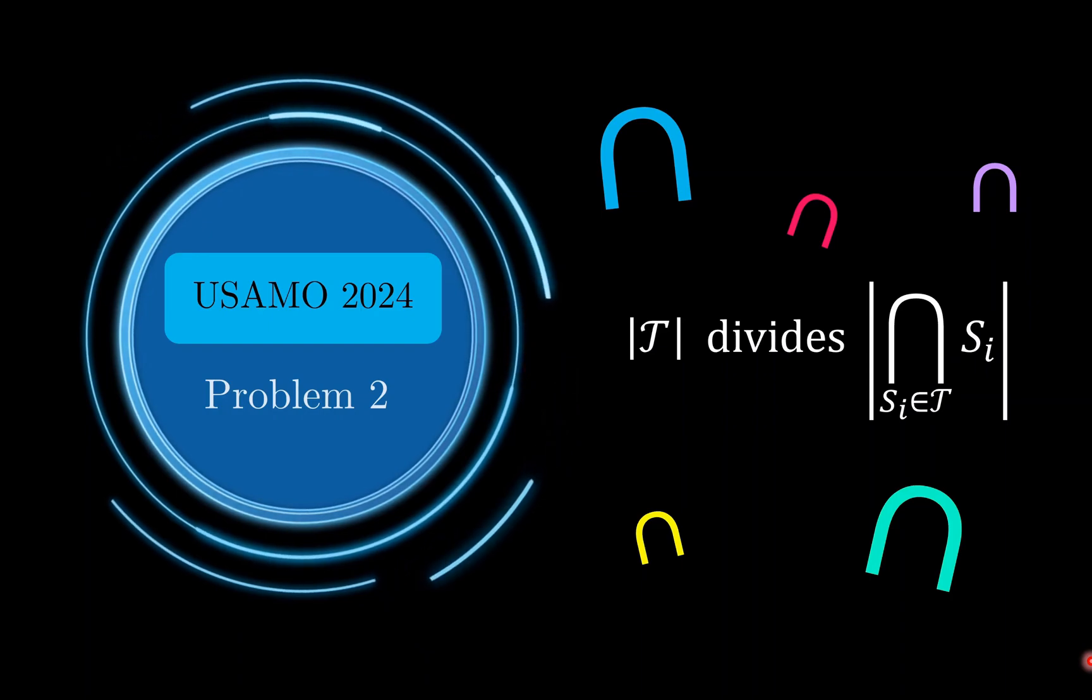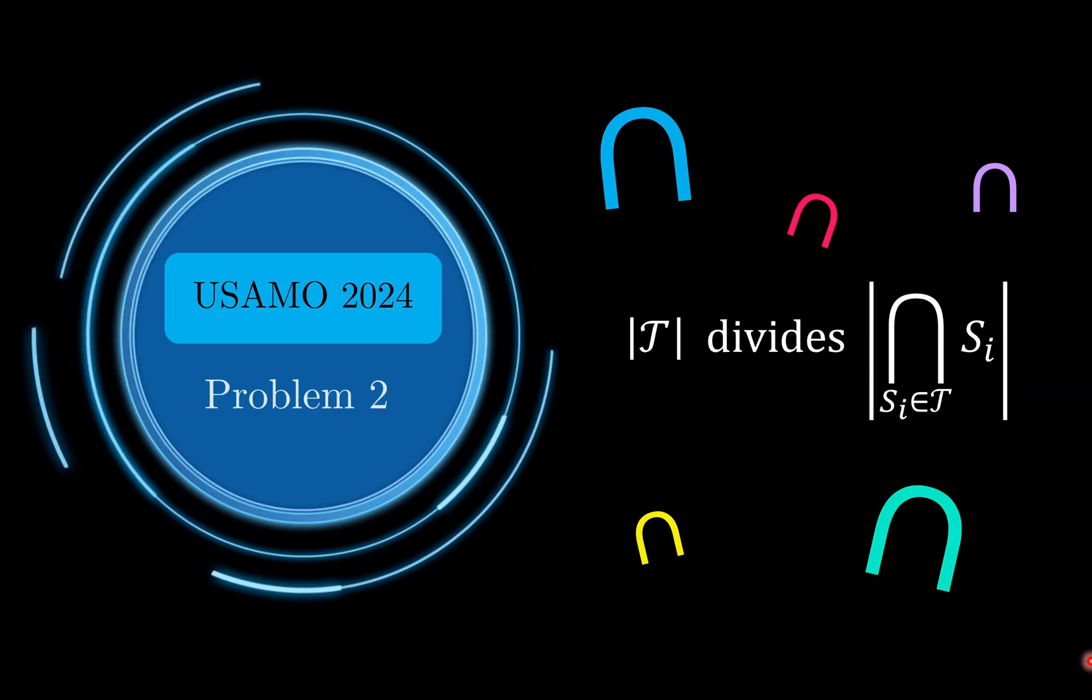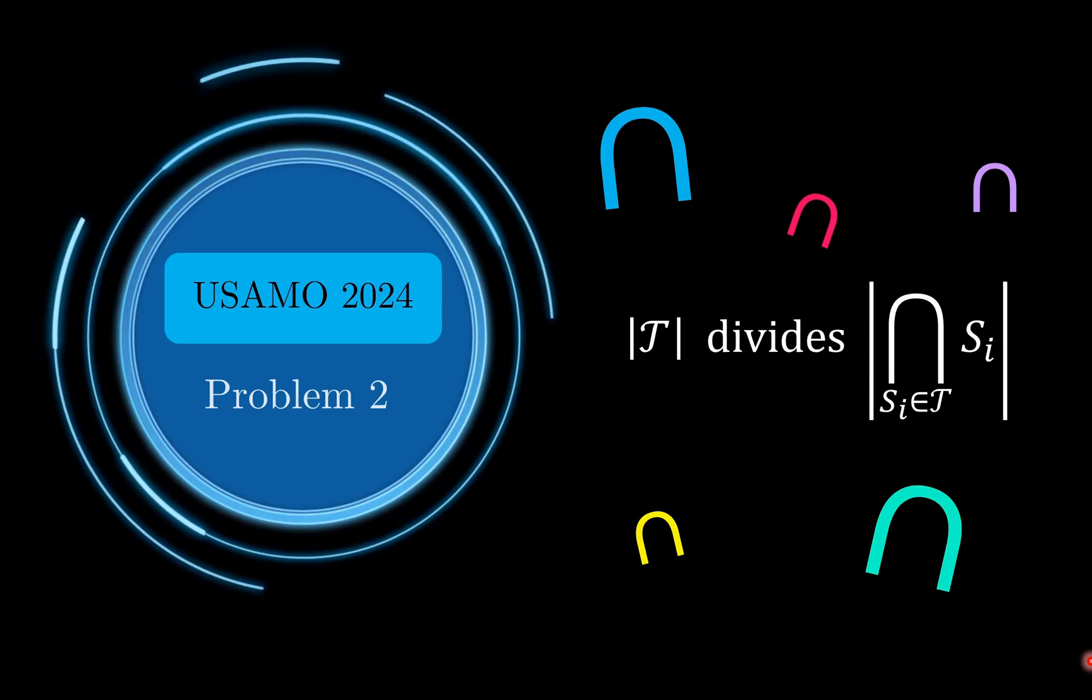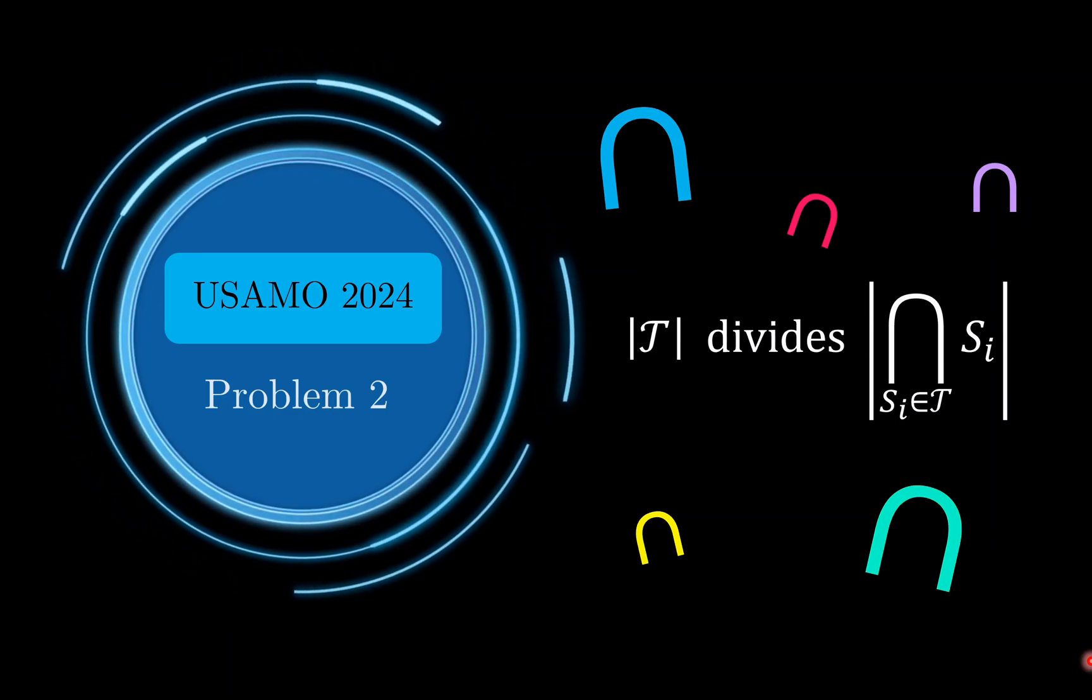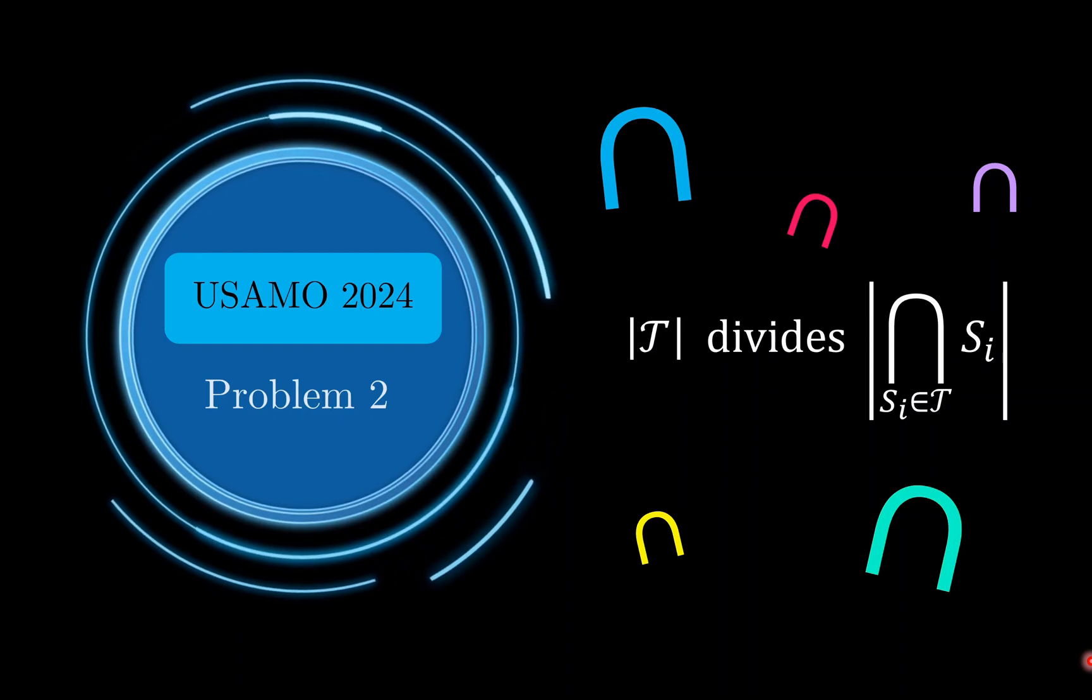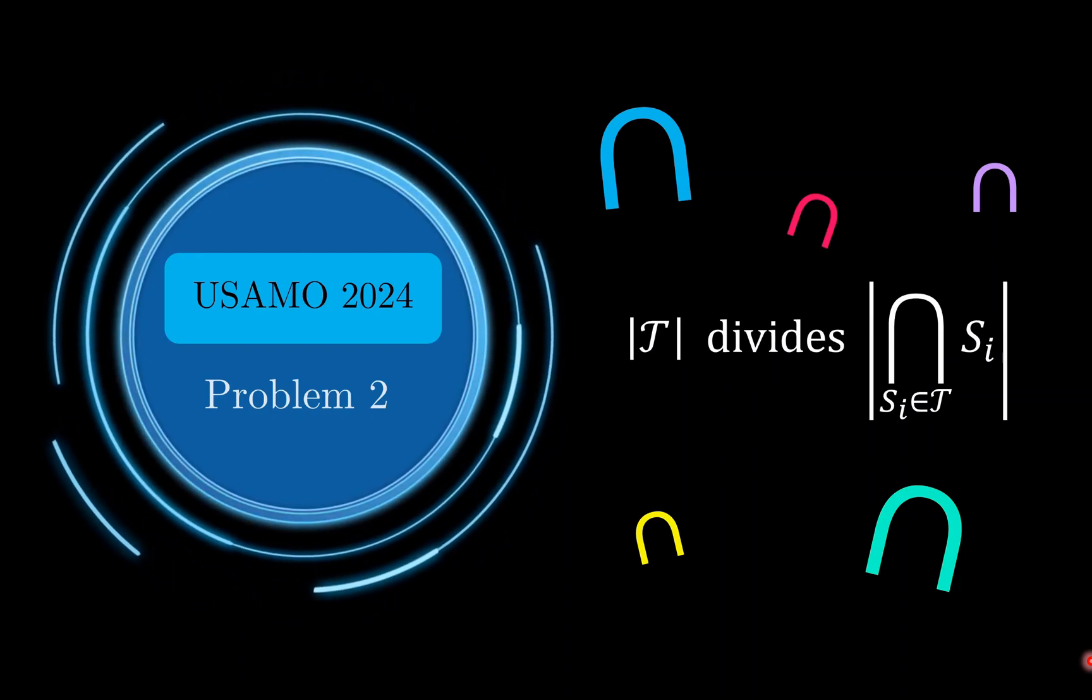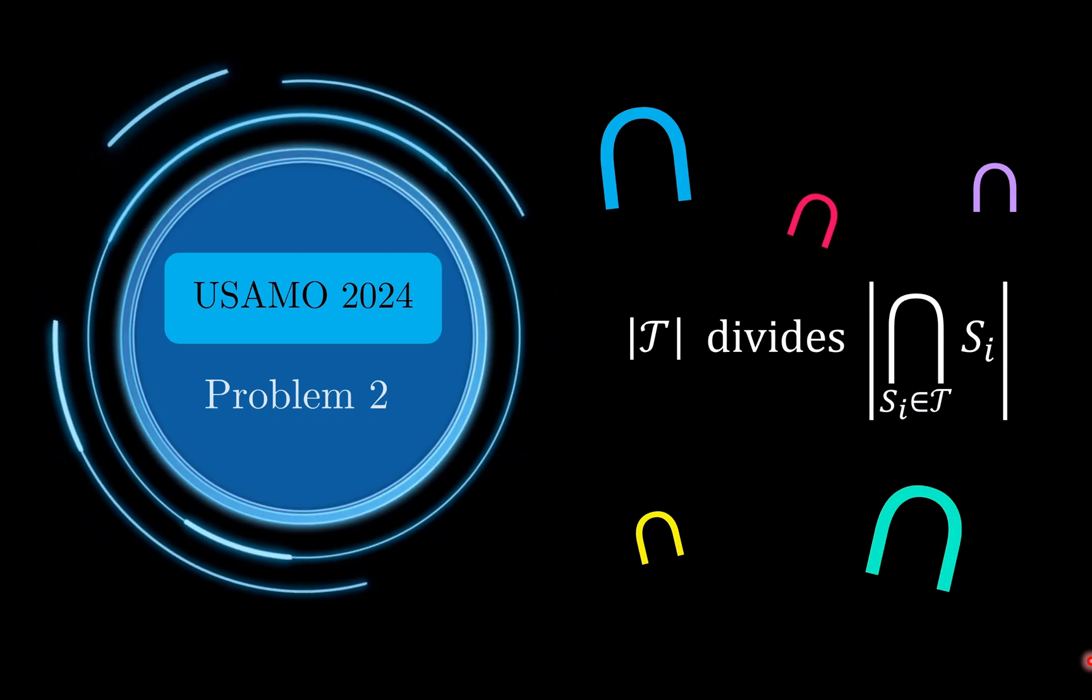So the general consensus seems to be that this year's USAMO seems to be at least a bit harder than previous years, and problem 2 is a perfect illustration of this. This problem involves quite deep level thinking and it can get a bit abstract and confusing at times. So, without further ado, let us take a look at what this monster combinatoric problem is.